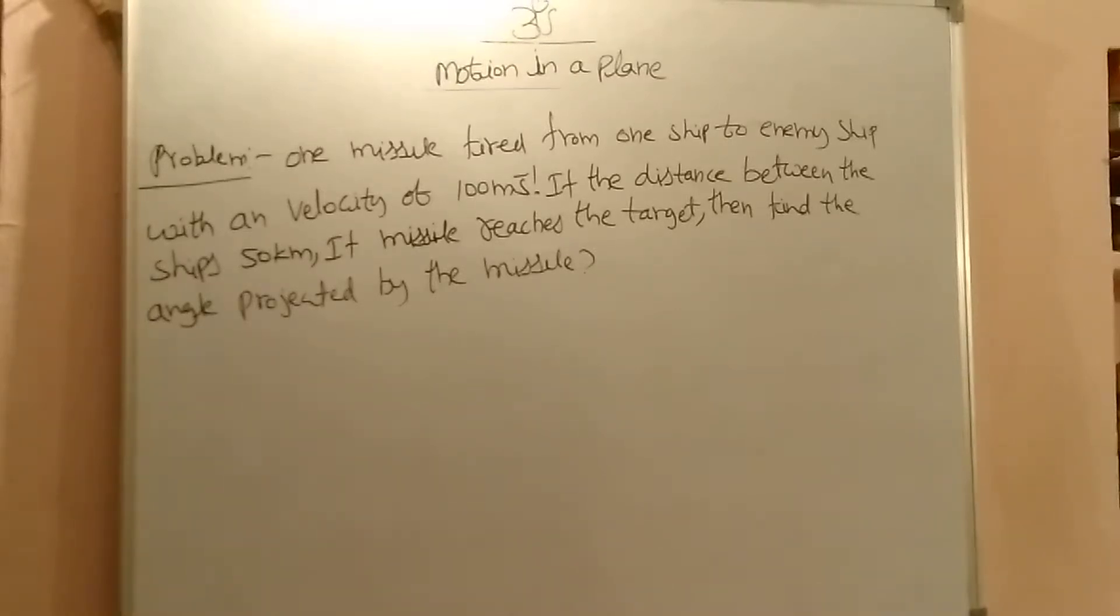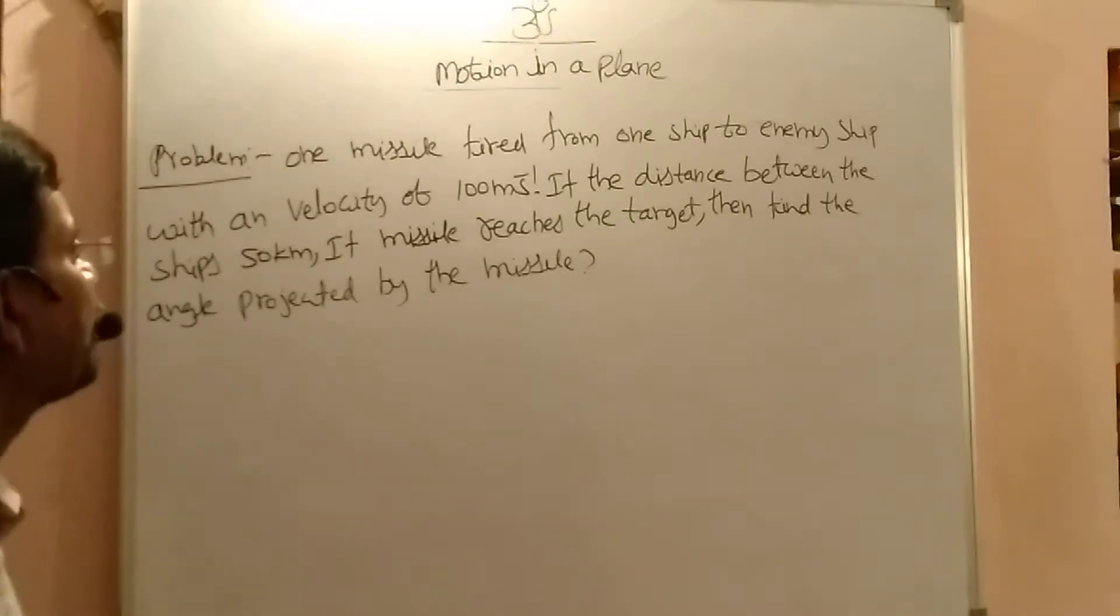One missile fired from one ship to another enemy ship with a velocity of 100 mps. The distance between the ships is 50 km. If the missile reaches the target, then find the angle projected by the missile.